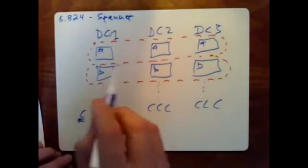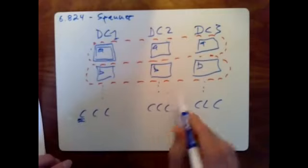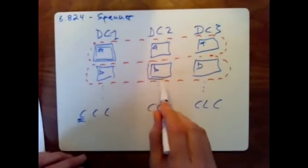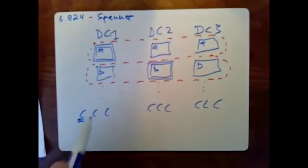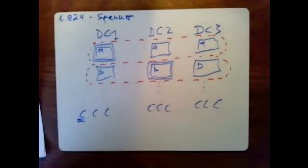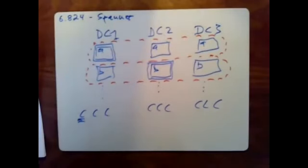Each Paxos group has a leader — a lot like Raft. Maybe the leader for one shard is in data center one, and the leader for another shard might be the replica in data center two. If a client needs to do a write, it has to send that write to the leader of the shard whose data it needs to write. These Paxos instances are replicating a log of operations; the leader sends out the log to all the followers, and the followers execute that log in the same order.